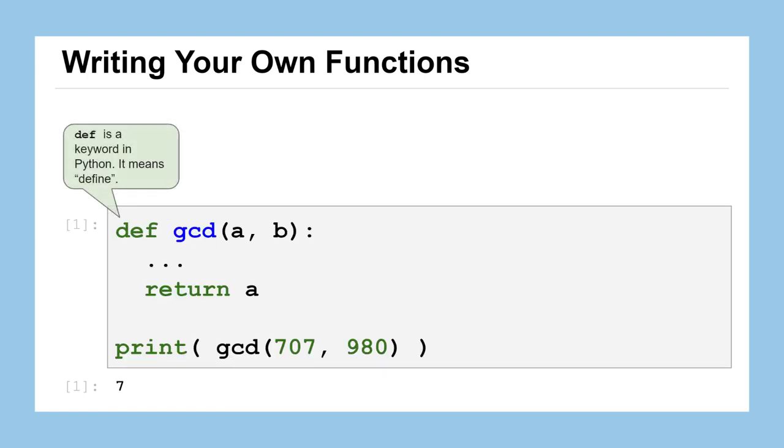So we start with this keyword def, D-E-F, and it's just shorthand for define. We're defining our function. What comes next is the name of the function. Here we'll name our function GCD. Just like with all variable names in Python, it's good to be descriptive. So this function will be computing the greatest common divisor, hence the name.